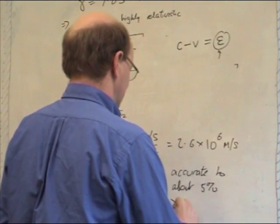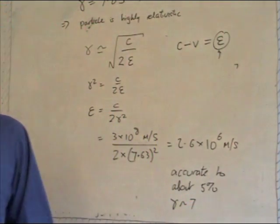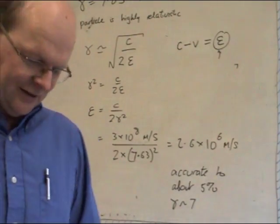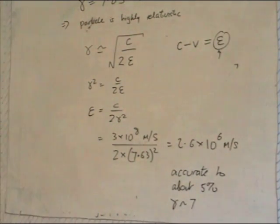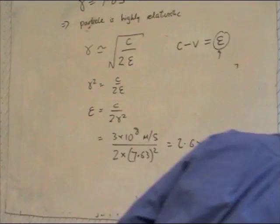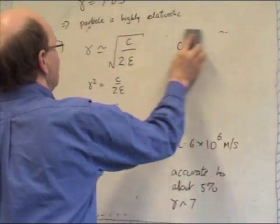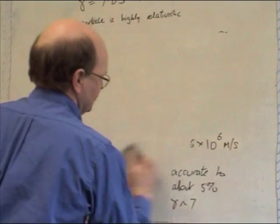For gamma is about 7. It gets much more accurate as gamma gets bigger and bigger and goes up to 10 or 50 or 100 or even higher than that. Actually, I was going to stop it there, but I think I'll just quickly show you why gamma is approximately c upon 2 epsilon before I go on to do part c of the question.